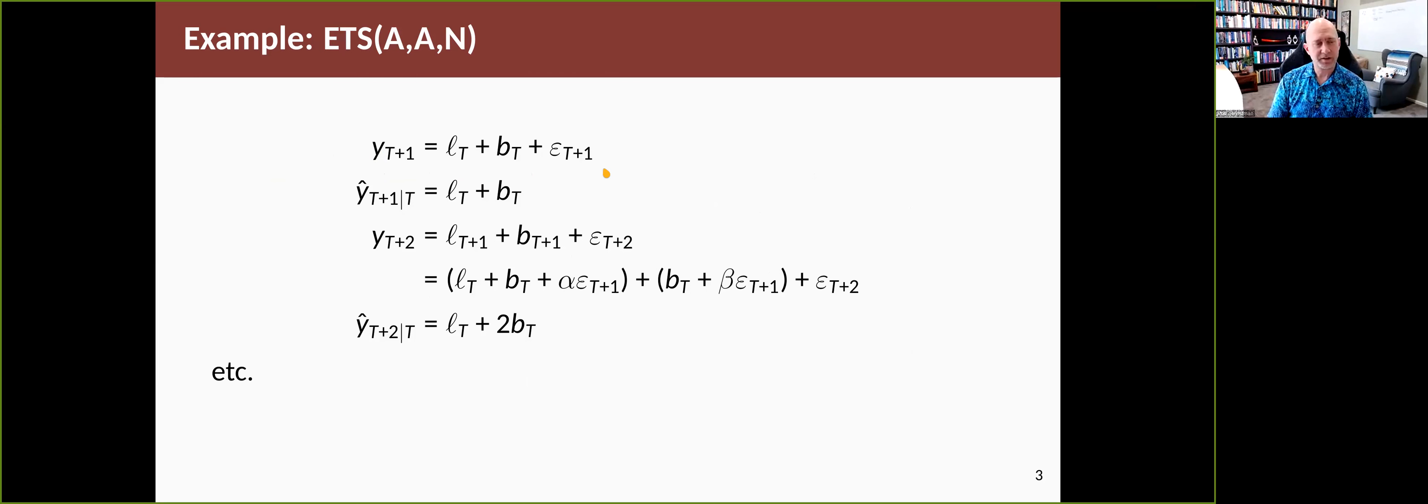We don't know what that error term is, so the mean is simply L plus B because epsilon has mean zero. The variance of it is the variance of epsilon because L and B are known—we've seen them—and so that's sigma squared.